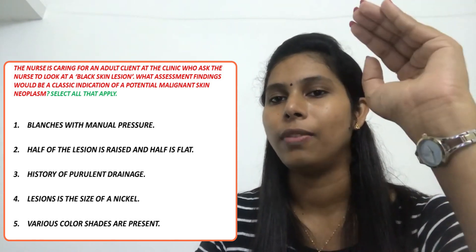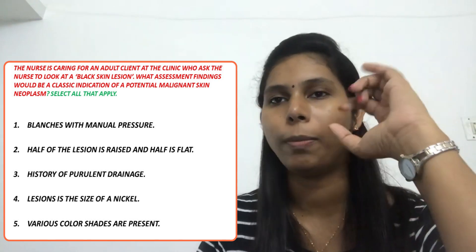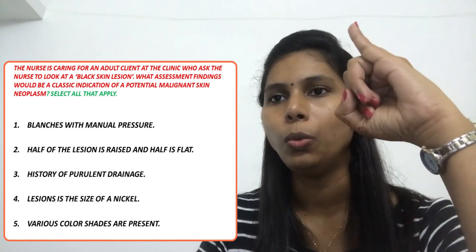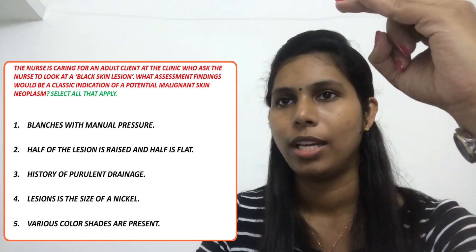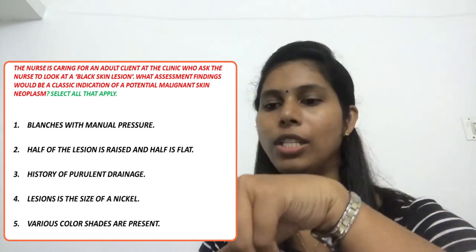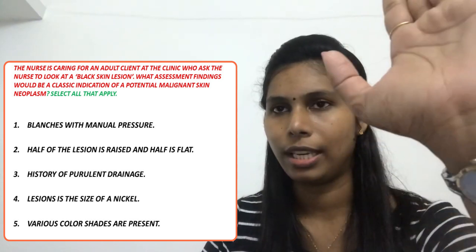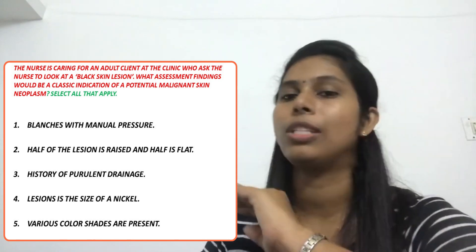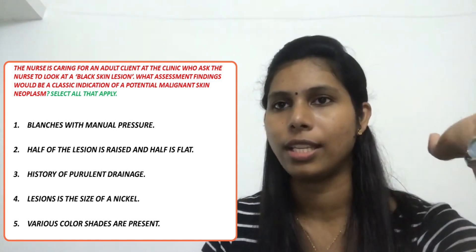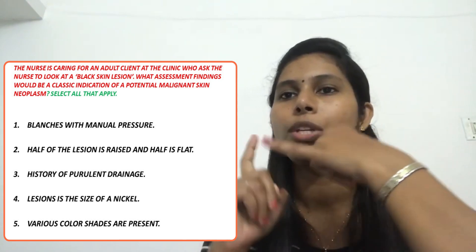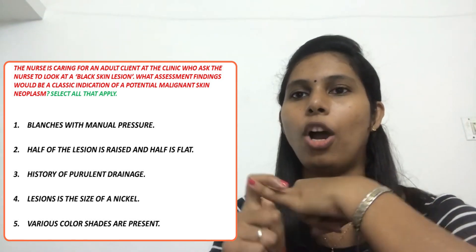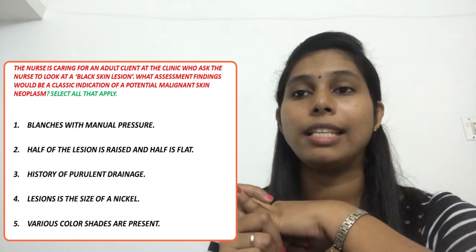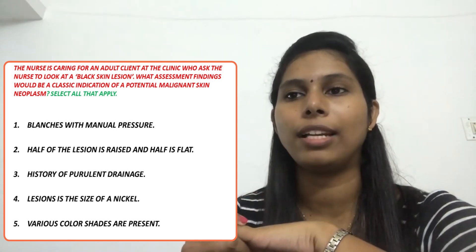The correct answers are options 2, 4, and 5. Blanching with manual pressure is not a classic indication of skin cancer, and history of purulent drainage is not a classic indication either. So the answers are: option 2 — half of the lesion is raised and half is flat; option 4 — lesion is the size of a nickel; option 5 — various color shades are present. Is that clear?